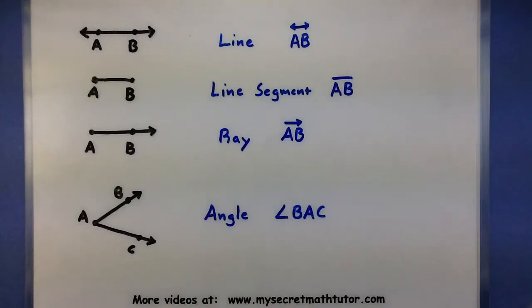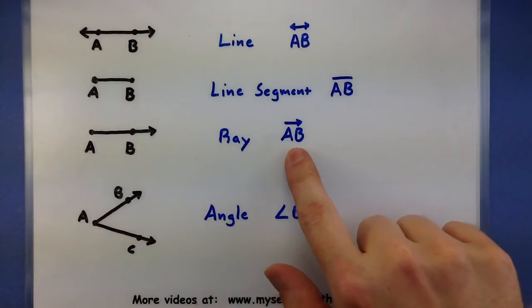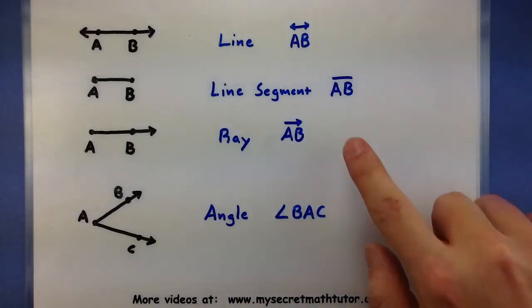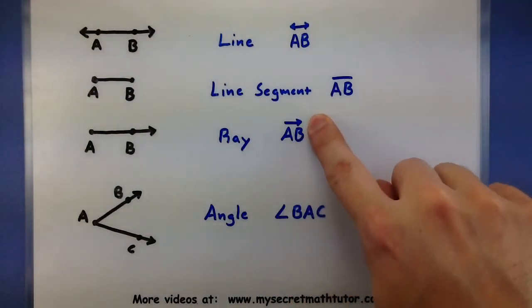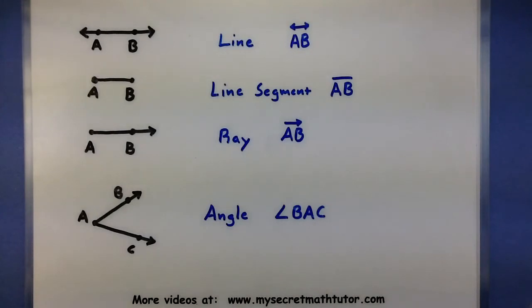A ray, it's kind of like the hybrid between the two. So we let it extend out in one direction forever and ever, but on the other one we stop it. The notation is, again, we identify those two points and we also put the arrow over it kind of showing which direction it extends out over. So since mine goes A, B and keeps going in the B direction forever, I want to make sure that my arrow is also indicating that same thing.